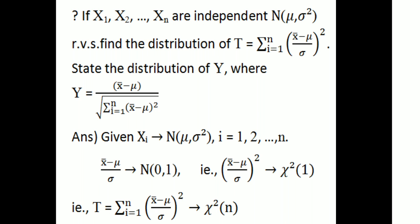Then the sum t = Σᵢ₌₁ⁿ (xᵢ − μ)²/σ² follows a chi-square distribution with n degrees of freedom, because by the additive property of chi-square, chi-square(1) + chi-square(1) + … (n times) equals chi-square(n). The summation runs up to n terms.